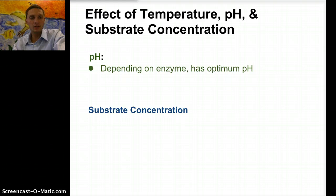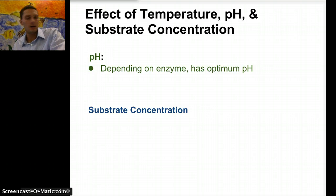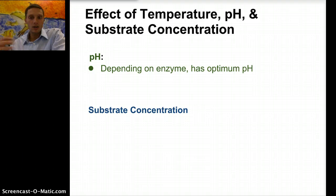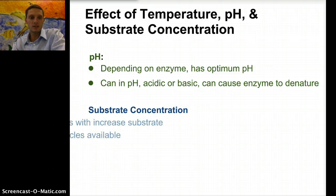The second factor is pH. Depending on the enzyme, it also has an optimum pH. Most enzymes within the body have a pretty stable pH in the range of about 6 to 8. Different from that is an enzyme in your stomach — your stomach is a very acidic environment, and there are enzymes that operate at a pH level of 2. It depends on where the enzyme is located, but it has a specific range that allows it to function. If the pH is too high or too acidic, it can also cause that enzyme to denature.